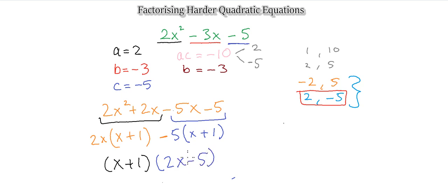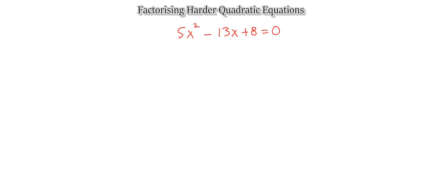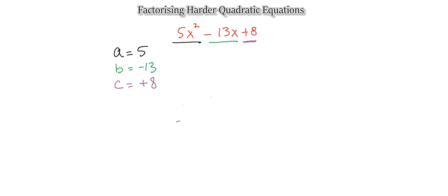Let's look at the next question. We have 5x squared minus 13x plus 8. Identifying our three terms: a is 5 from the first term 5x squared; b is minus 13 from the second term; and c is positive 8. Two numbers multiplying gives a times c, which is 5 multiplied by 8 equals 40. Two numbers adding gives minus 13. So we need two numbers that multiply to positive 40 and add to negative 13.